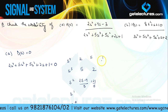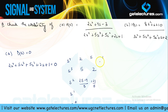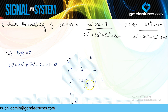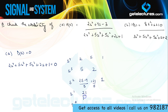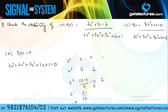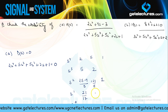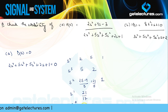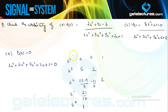To obtain the next row coefficient: (5×5 − 2×2)/5 = 21/5. For the next coefficient: (5×1 − 0)/5 = 1. Then: (21/5 × 2 − 5×1)/(21/5) = 21/17. The last coefficient is 1. All coefficients in the first column are positive — no missing coefficients, no sign changes — which means this system is stable.